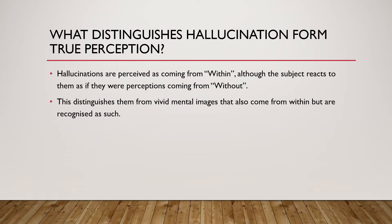What distinguishes hallucination from true perception? Hallucinations are perceived as coming from within — that means subjectively, inside my head, inside my body — although the subject reacts to them as if they were perceptions coming from outside. This distinguishes them from vivid mental images that also come from within but are recognized as such. If a person is seeing a vivid mental image but knows it is coming from his own imagination, it is not hallucination — it is just a mental image. Whereas in hallucination, the person believes they are coming from outside, as if they are real.